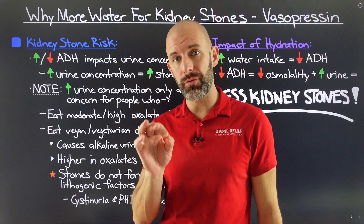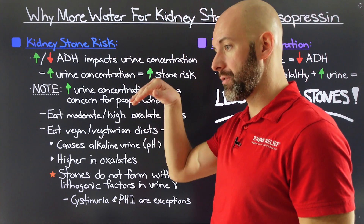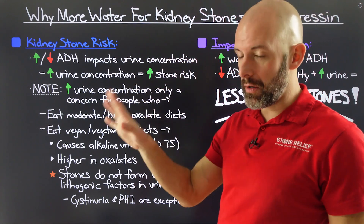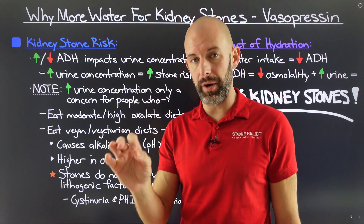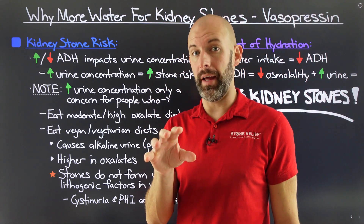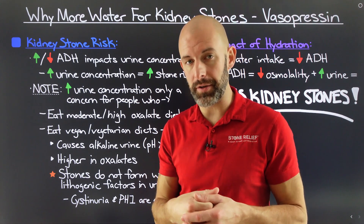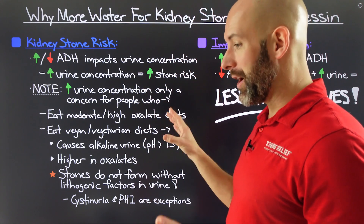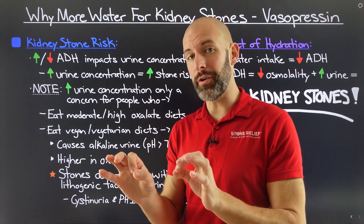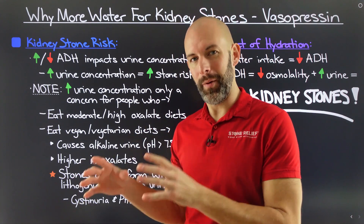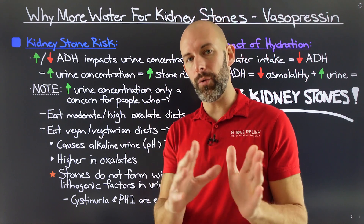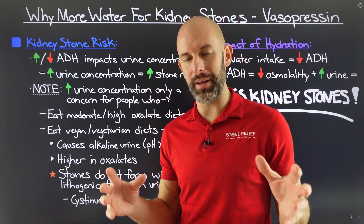Let's tie this all together as it relates to kidney stone risk. When it comes to increases or suppression of the anti-diuretic hormone in your body, this is going to impact your urine concentration. Urine concentration is directly linked to kidney stone risk for most individuals because the more particles found in your urine, the higher the likelihood they will bind together, crystallize, and form kidney stones. However, urine concentration is really only a concern for people who are consuming a diet that has lithogenic or stone-forming materials present. If you don't have stone-forming materials present in your urine, you're not going to form kidney stones — the raw materials, the ingredients, are not there.